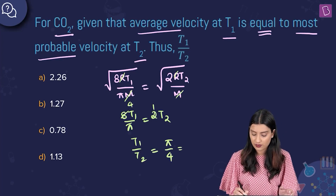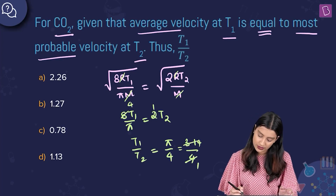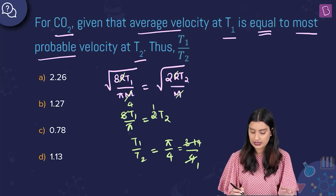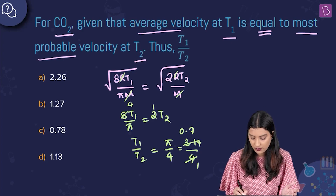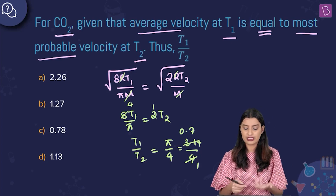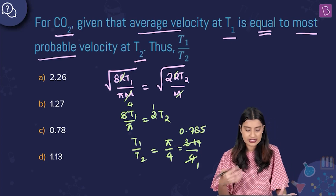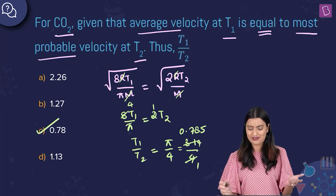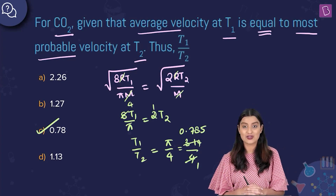π is approximately 3.14, so π/4 = 3.14/4 ≈ 0.785. Option C has 0.78, which matches closely, so option C, T₁/T₂ = 0.78, is the right answer.